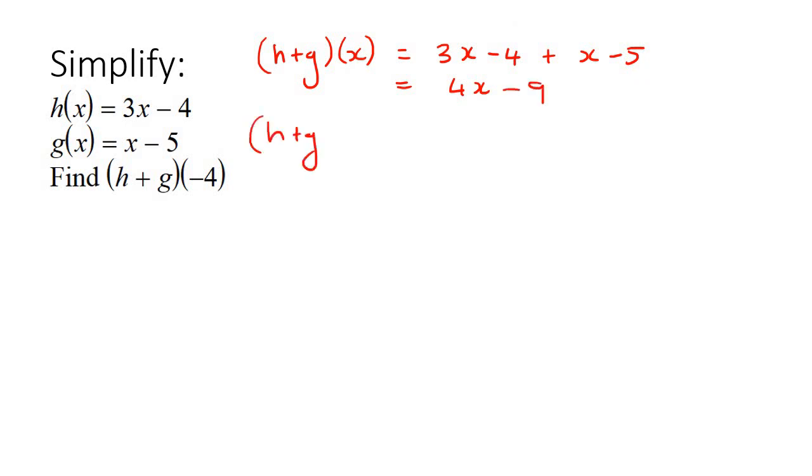Now if we want to plug in a negative 4, then we just go like that. So wherever you see x, you'd plug in negative 4. And that's going to give you negative 16, negative 9, and that's going to be negative 25.